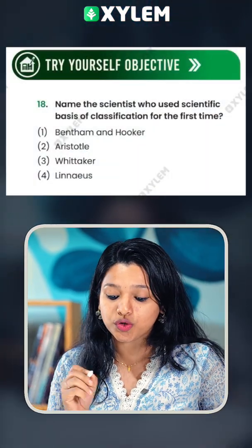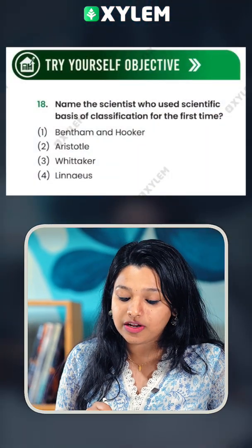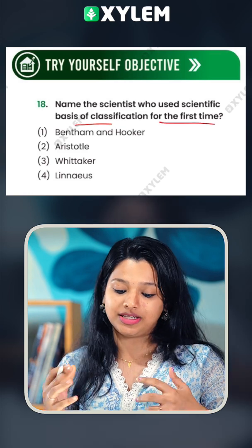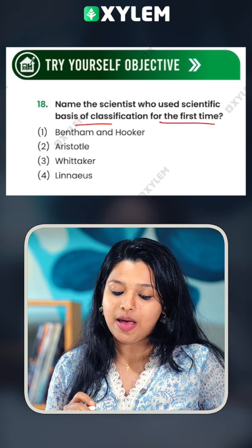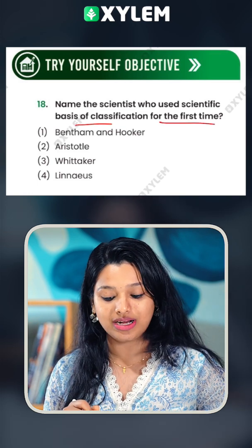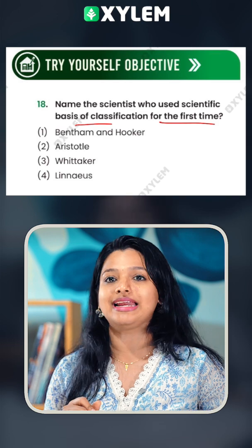Name the scientist who used the scientific basis of classification for the first time. The options are: Bentham and Hooker, Aristotle, Victor, and Linnaeus.